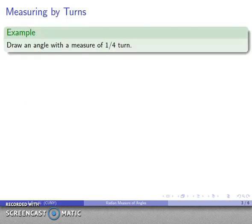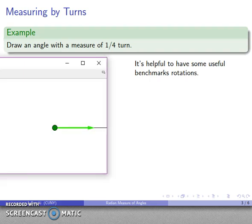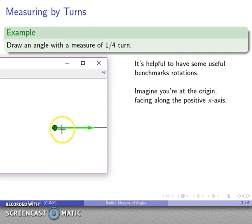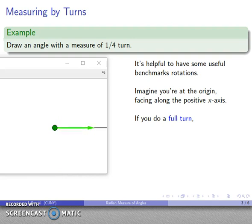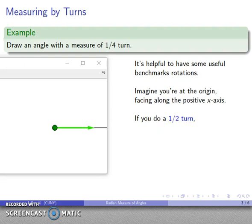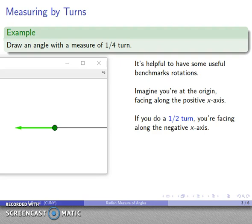Let's draw an angle with a measurement of one quarter of a turn. To do this it's helpful to have some benchmark rotations — standard rotations to use as reference points. Imagine you're at the origin facing along the positive x-axis. If you do a full turn counterclockwise, you end up facing the same direction as before. If you do a half turn, you end up facing along the negative x-axis.